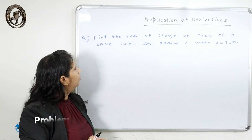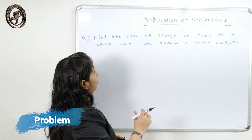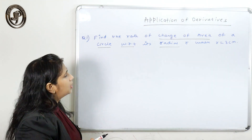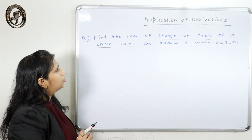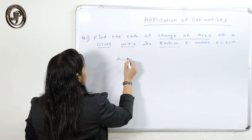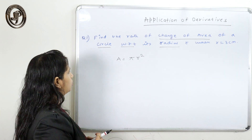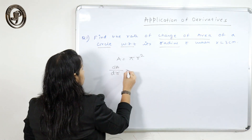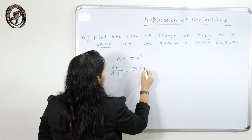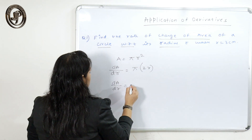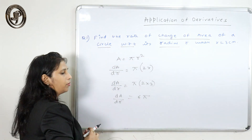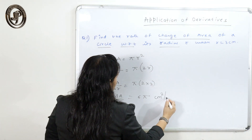Let's start with some basic problems. Find the rate of change of area of a circle with respect to radius. The formula for area of a circle is A = πr². We differentiate area with respect to radius: dA/dr = 2πr. At r = 3, dA/dr = π × 2 × 3 = 6π. The unit for the rate of change of area with respect to radius is centimetre square per centimetre.